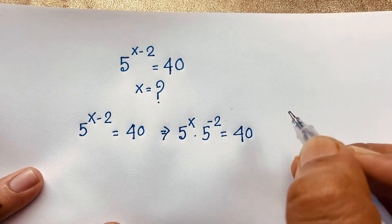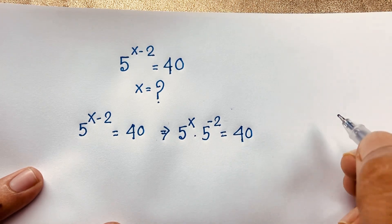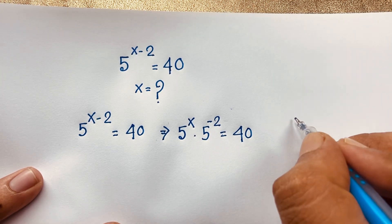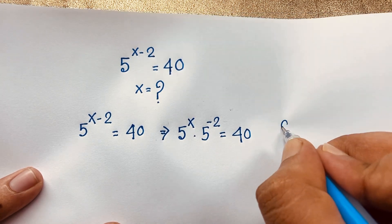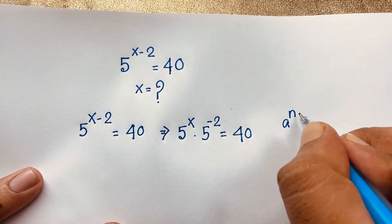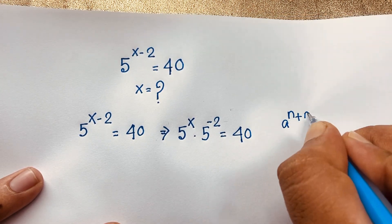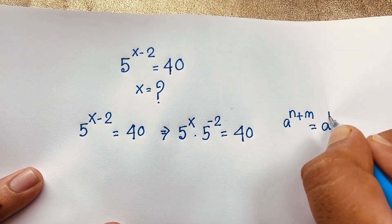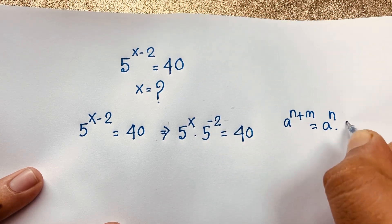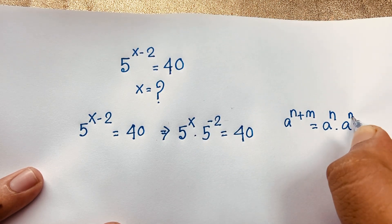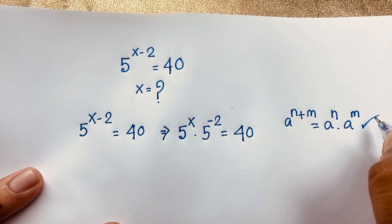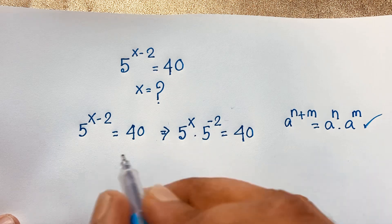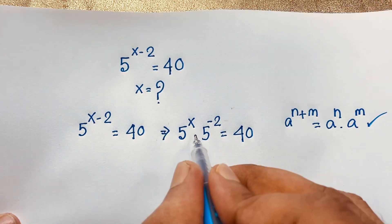I just use the exponential law: a to the power n plus m, it will be a to the power n times a to the power m. According to this law, I can rewrite this expression like this.